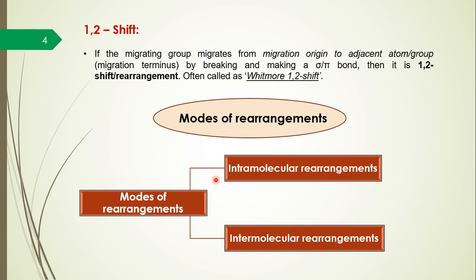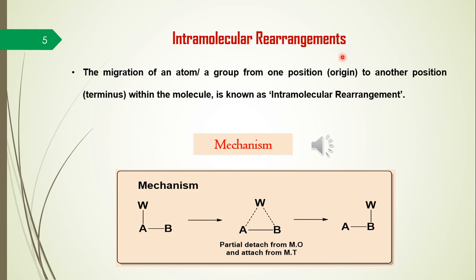Intramolecular rearrangements and intermolecular rearrangements. In intramolecular rearrangement, the rearrangement takes place within the molecule — the migration of an atom or group from the migration origin to the migration terminus occurs within the same molecule. The mechanism involves partial detachment of the migrating group from the migration origin and partial attachment to the migration terminus simultaneously — meaning bond breaking and bond making take place at the same time.